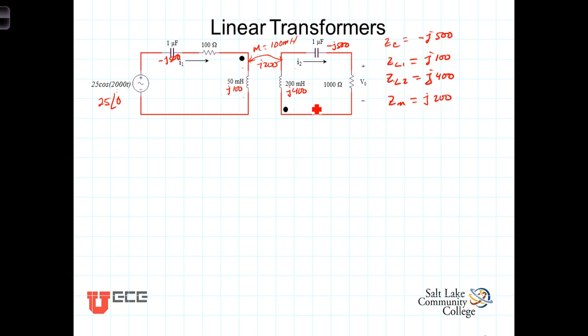Now because I2 is referenced into the dot, the voltage drop across this inductor due to I2 will also be referenced positive at the dot. So I have a positive reference voltage here which is going to be equal to the impedance of the mutual inductance which is j200 times I2 the current flowing in the secondary.